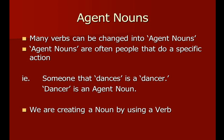The Agent Noun is a name given to a person connected with a certain job or work they are doing, or any activity or function. For example, someone who dances is called a Dancer. The word 'Dancer' is an Agent Noun — it describes a certain job or work. The person who is dancing is a Dancer. So we are creating a noun by using the verb. That is the Agent Noun.